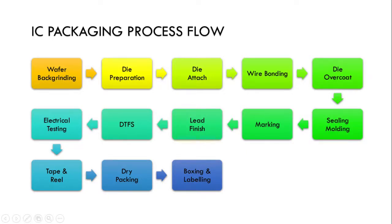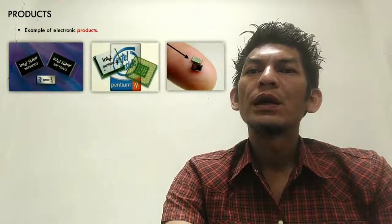The flow of IC packaging process includes cleaning process, wafer back grinding, die preparation process, and testing. We have wire bonding process, die attach, sealing process, marking, finish process, electrical testing, tape and reel, dry packing, boxing, and labeling. This is a sample of an electronic product. That's all I want to share about the introduction of semiconductor physics.